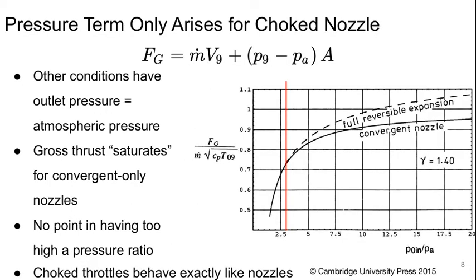Basically, this pressure term only is non-zero if the nozzle is sort of past choked. If the nozzle is unchoked or just right at the choke condition, then the outlet pressure equals the atmospheric pressure and the second term is zero.